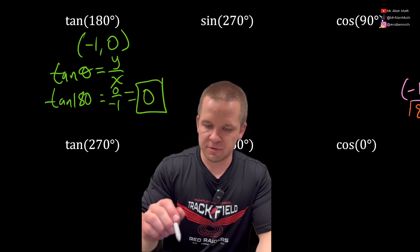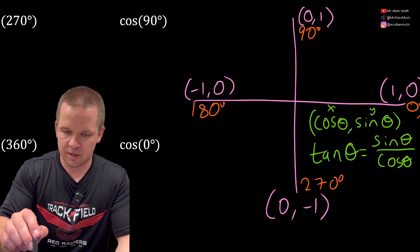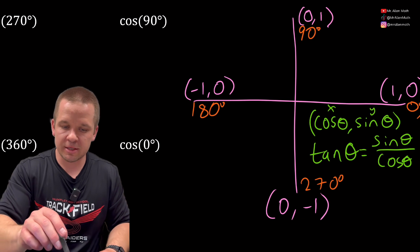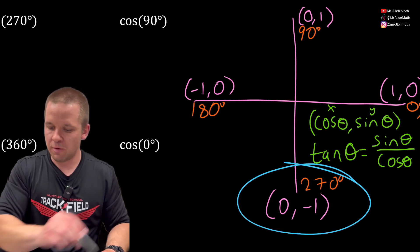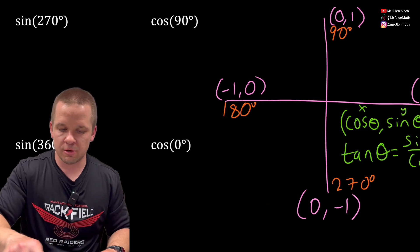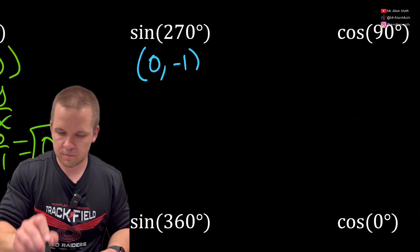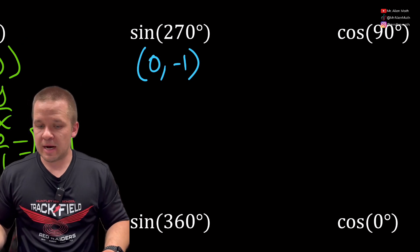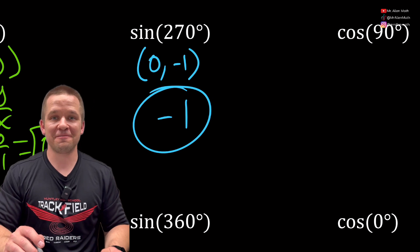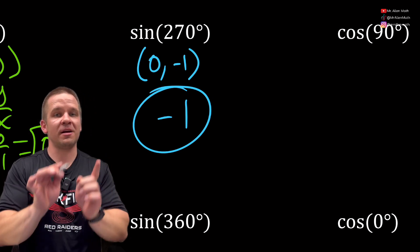How about sine of 270? 270 is right down here. So I'm gonna write down that ordered pair, (0,-1). Well, sine is my y-coordinate, right? So that's my answer. Easy peasy if you remember the coordinates and that it's (cosine, sine).